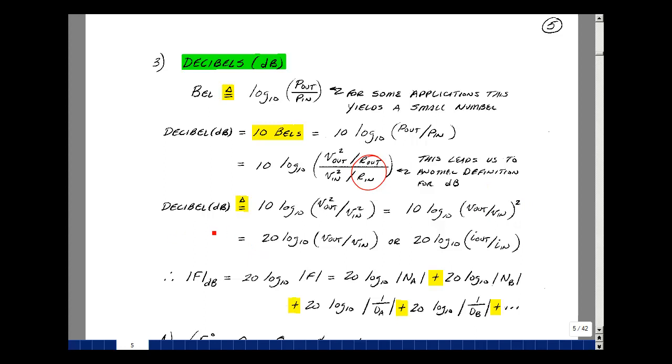So a decibel for voltage transfer functions is going to be 20 times the log base 10 of that ratio of output to input voltage. You could do the same thing for current.